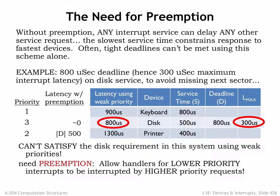The printer can only be preempted by the disk, so its worst-case latency is 500 microseconds. Since it has the lowest priority, the worst-case latency for the keyboard is unchanged at 900 microseconds, since it might still have to wait on the disk and printer. With the proper assignment of priorities, the strong priority system can guarantee that disk requests will be serviced by the 800-microsecond deadline.